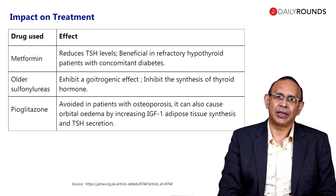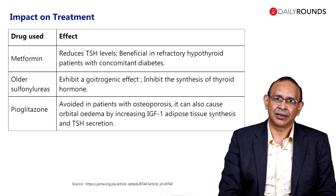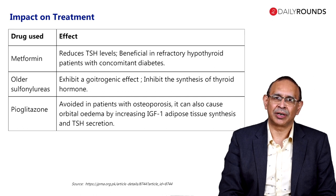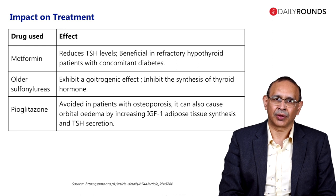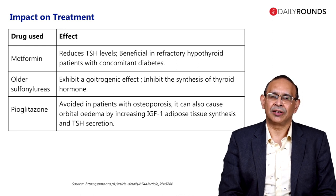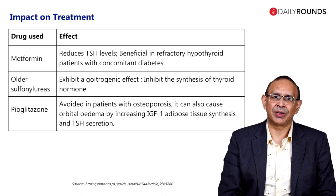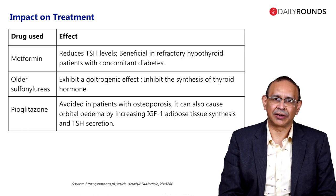If you remember, we already mentioned that metformin can reduce TSH levels. So if you are struggling with refractory hypothyroidism and the patient has concomitant diabetes, do think of increasing the metformin dose. Older sulfonylureas — though we don't use them anymore — are said to have a goitrogenic effect, but they are not used in practice now.